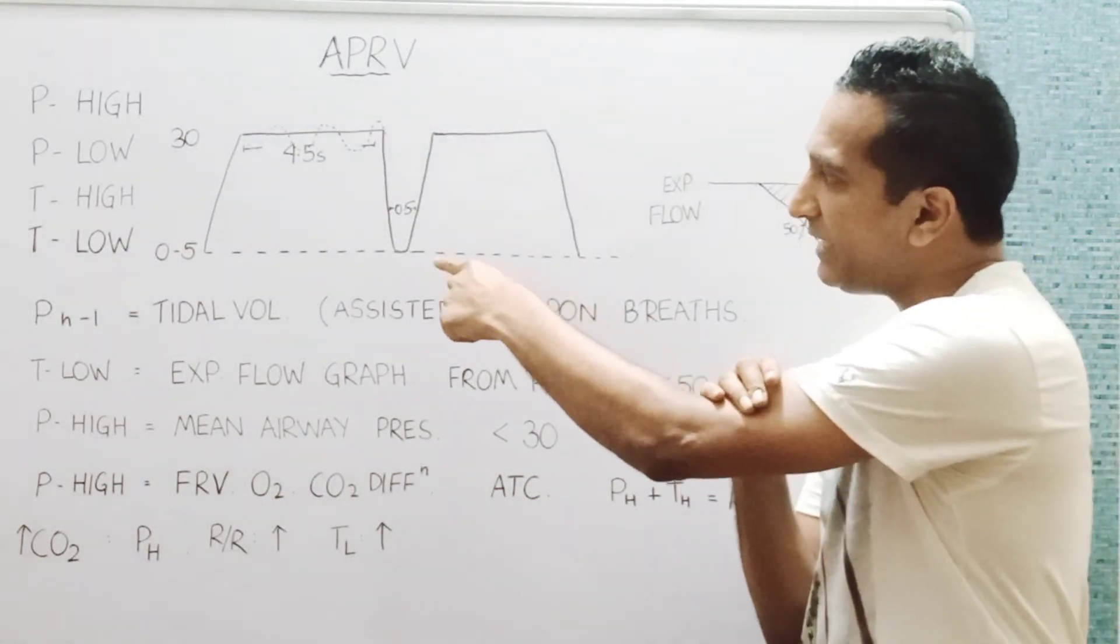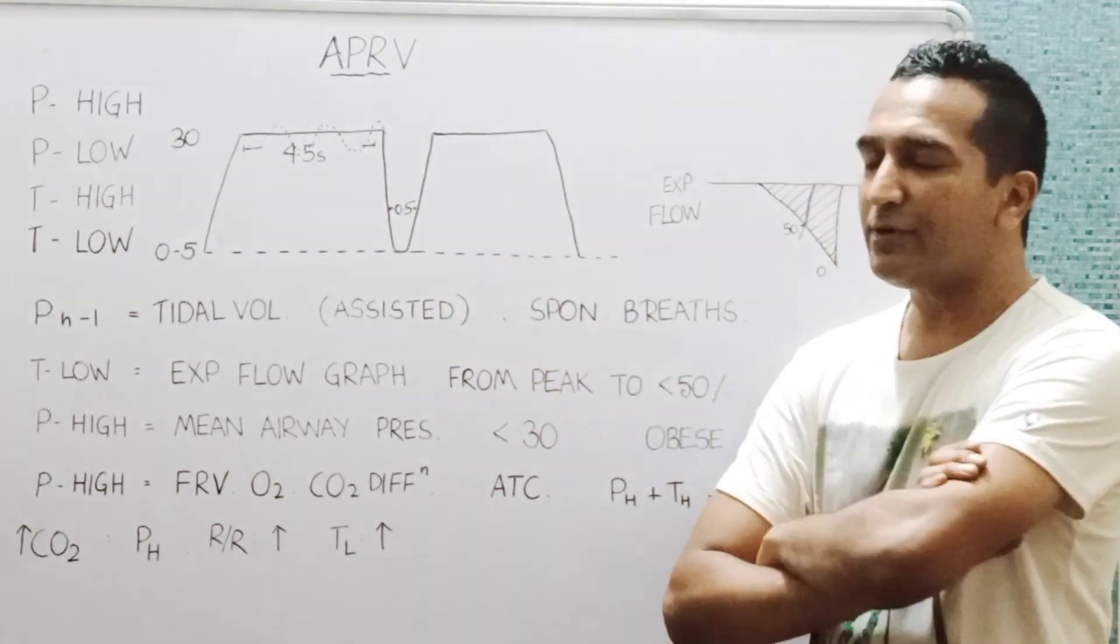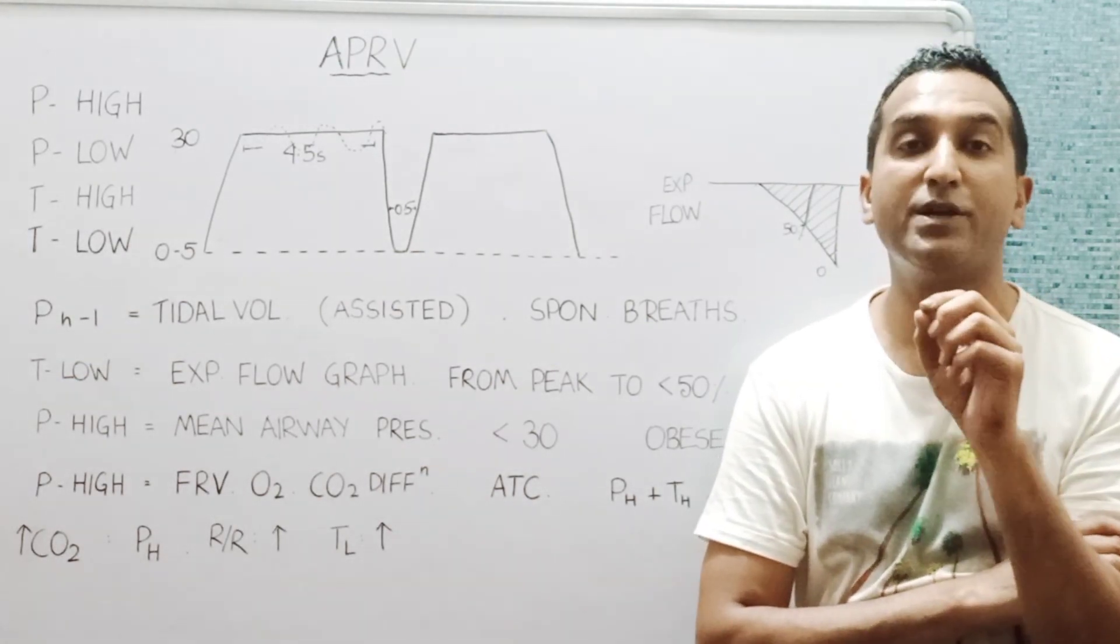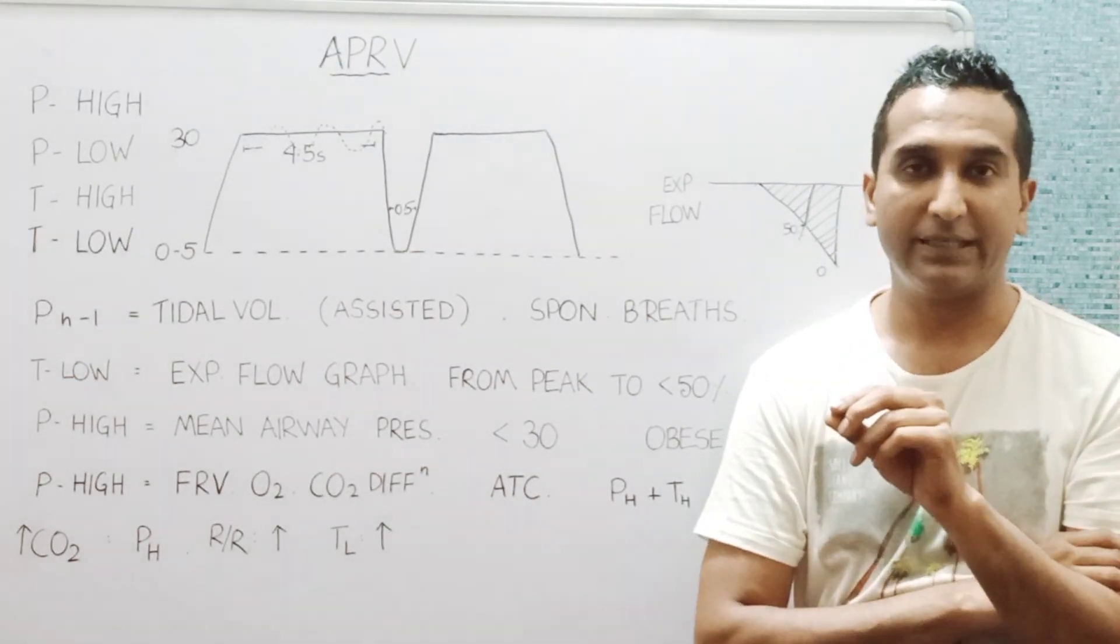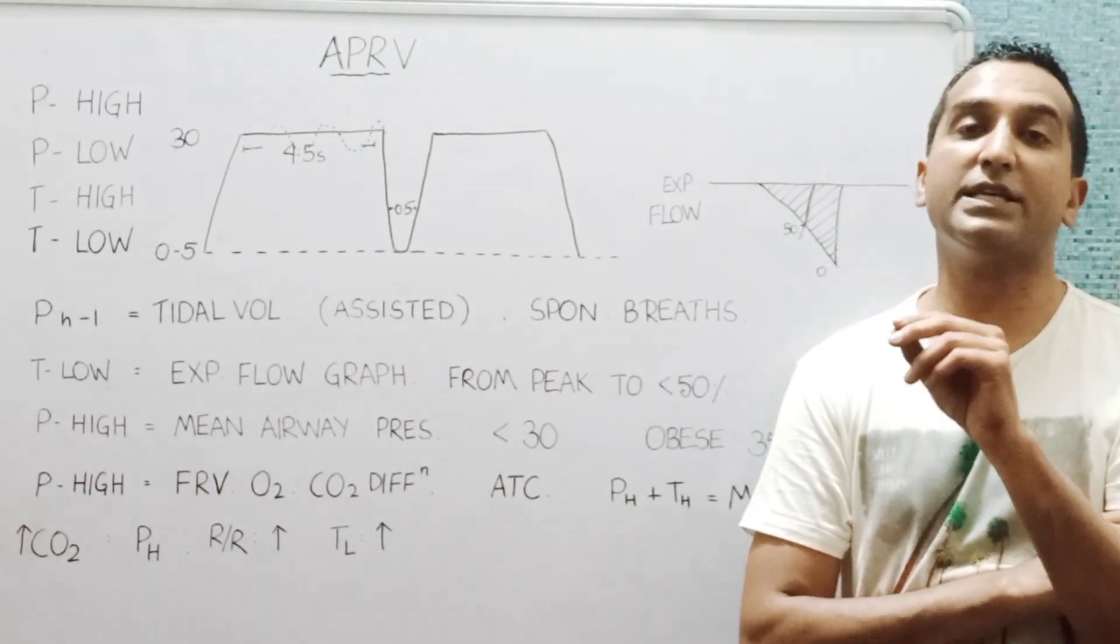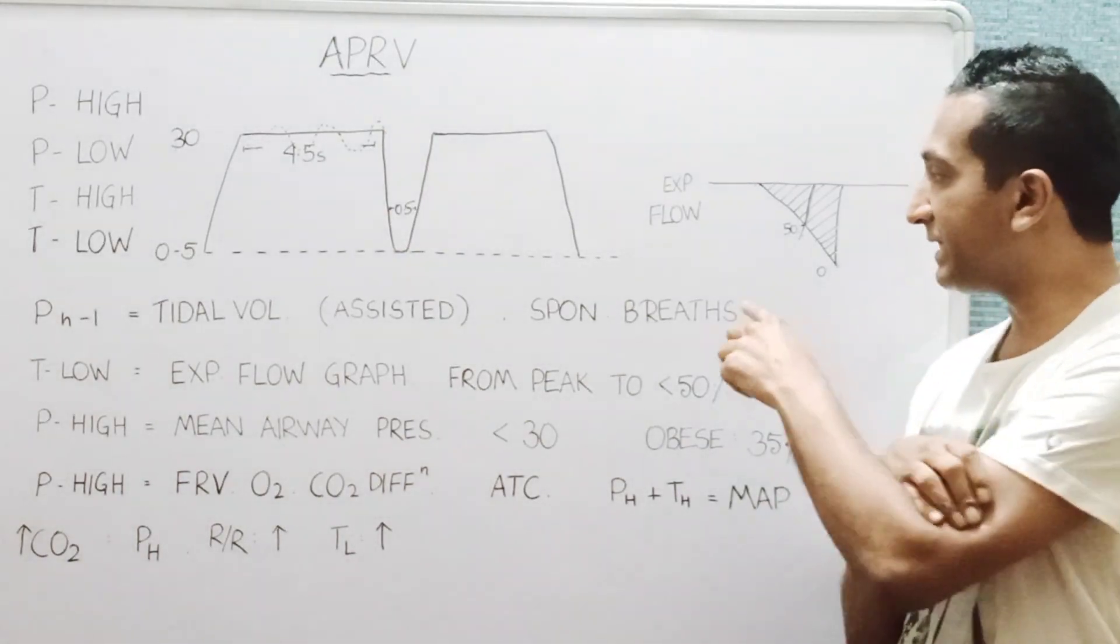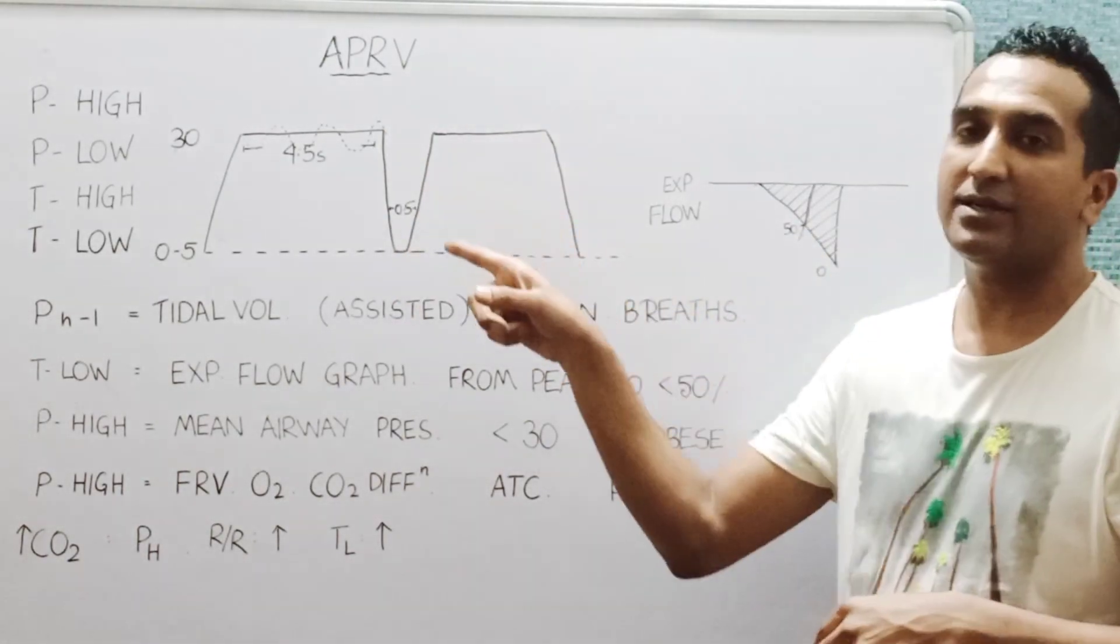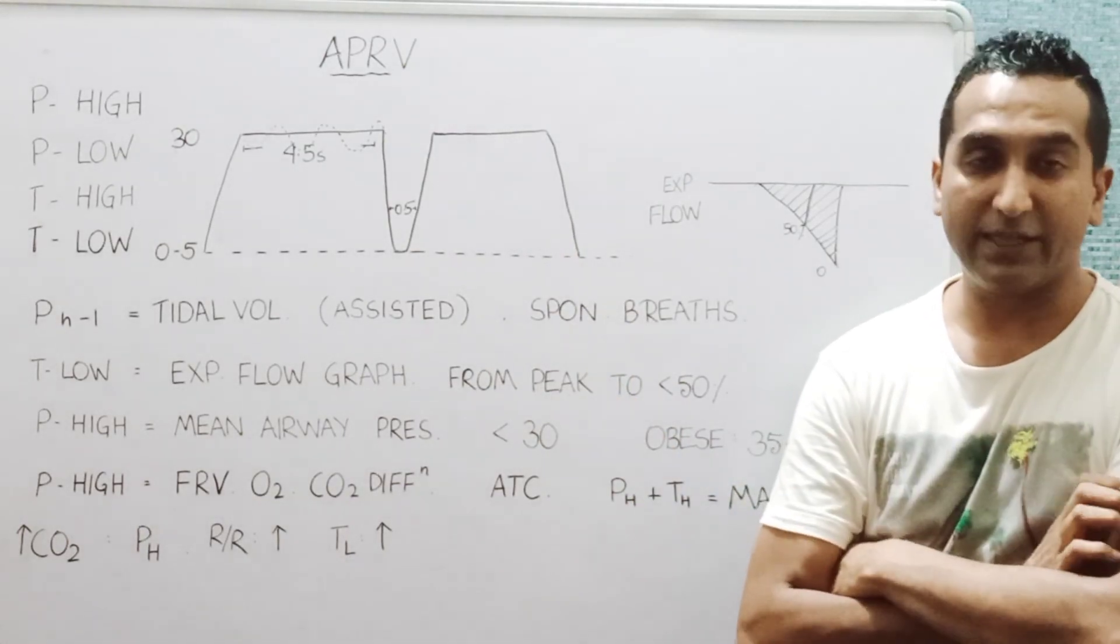When we set the T low, we set an arbitrary number of 0.5 seconds to begin with, but you should have a look at the expiratory flow graph. The expiratory flow should not drop to more than 50 percent of the peak.